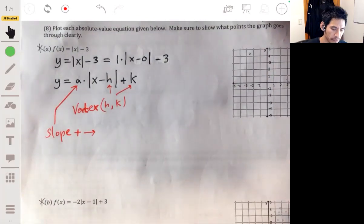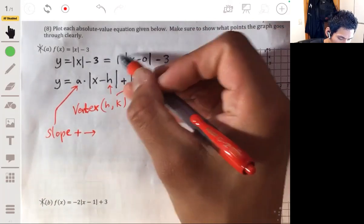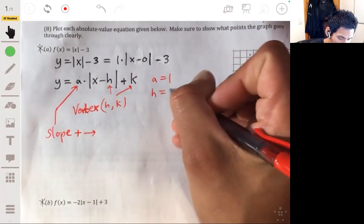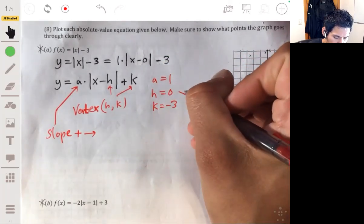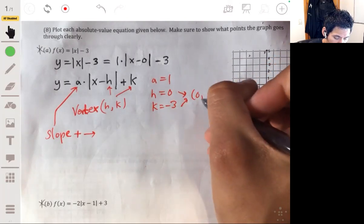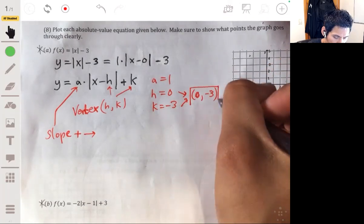So what's the point of that is we can see then the one is the a, h is zero, and k is negative three. So then those two guys together is zero negative three, so this is where the vertex is.